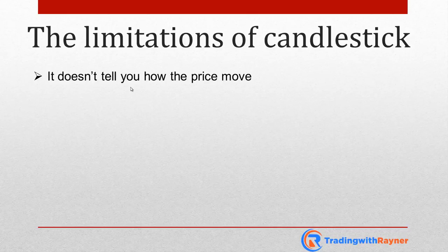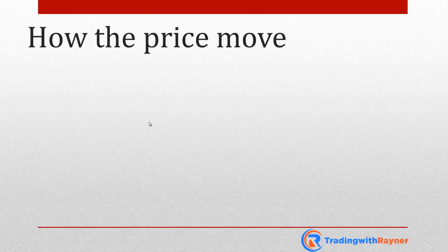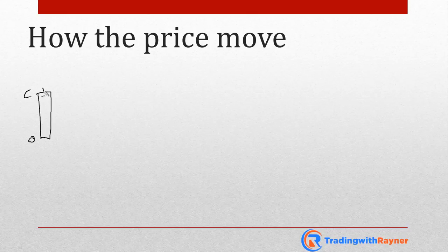Number one: it doesn't tell you how the price moves. Number two: it doesn't tell you the big picture. So let me explain what I mean. For how the price moves — let's say you have a candlestick chart that looks like this: a bullish candlestick. It opens here and it closes here. Maybe this is the high and low for the day on a daily chart.